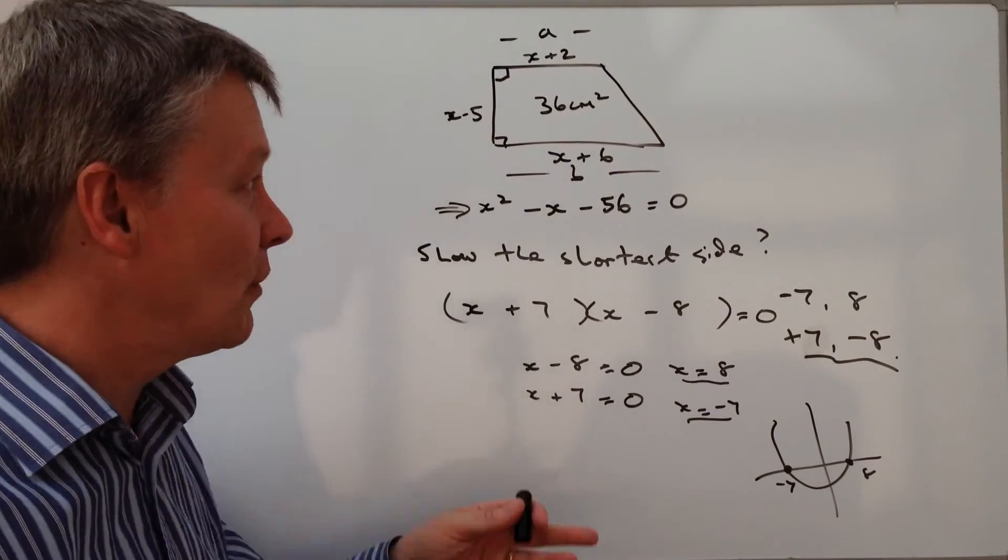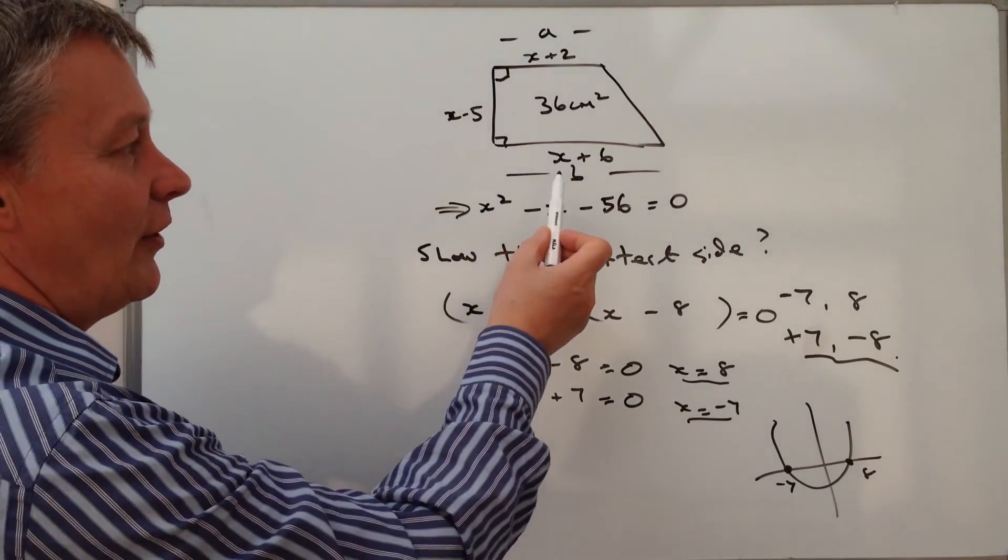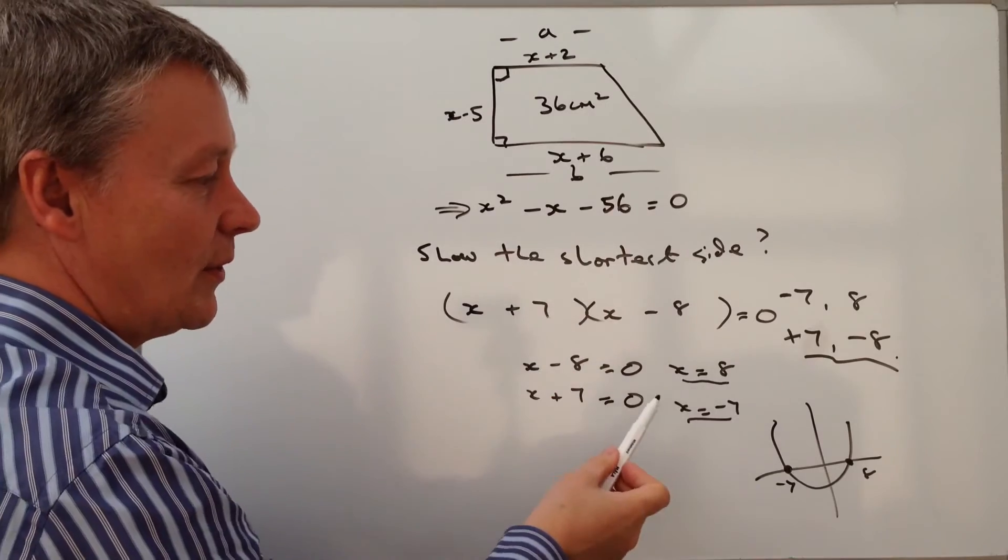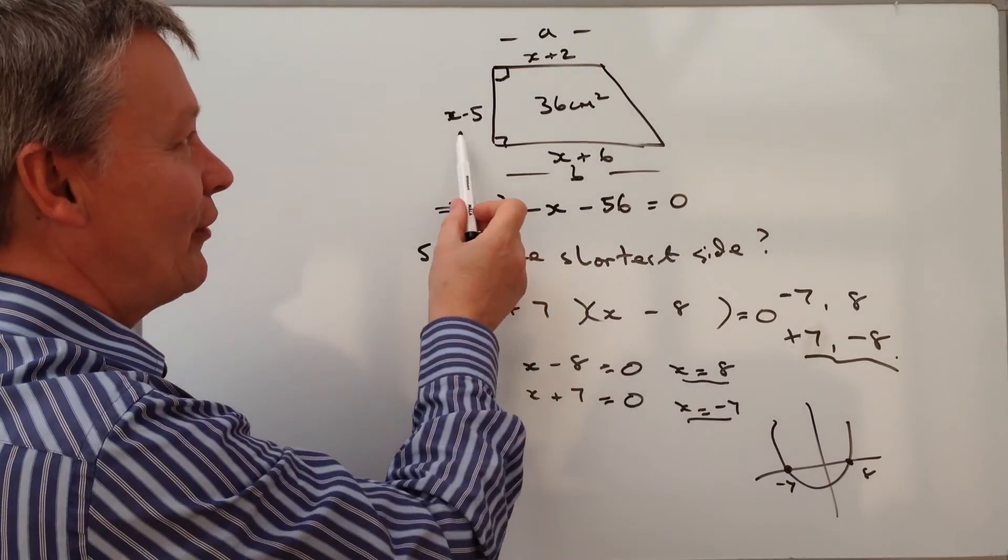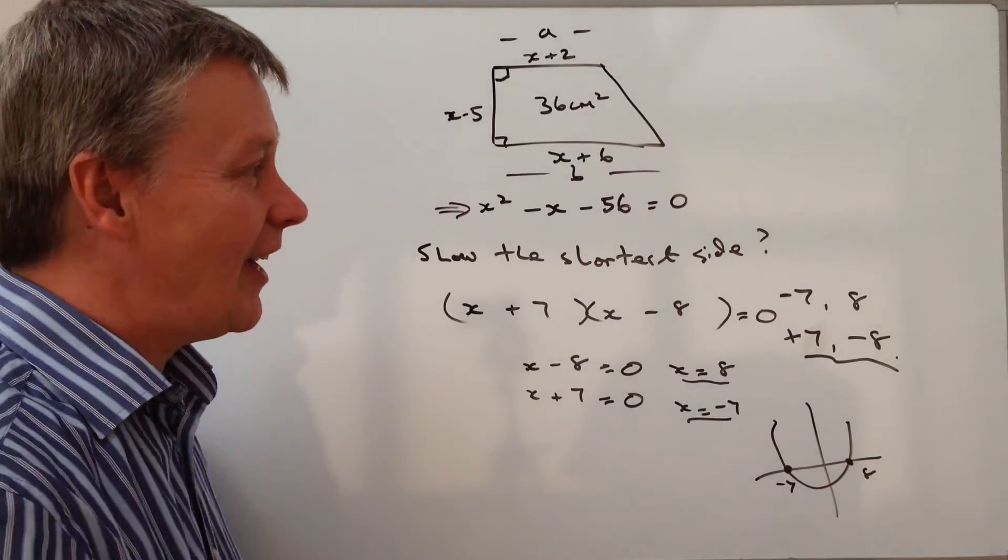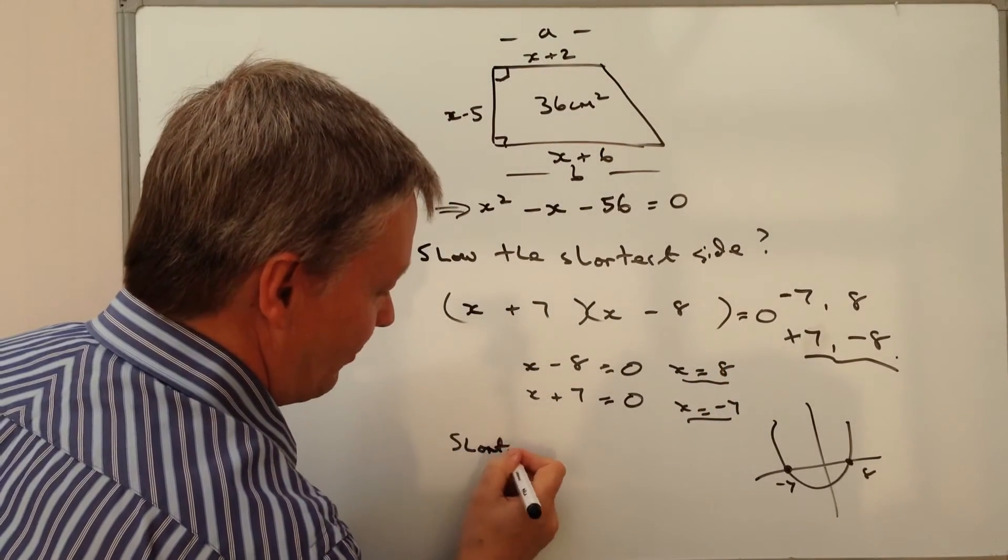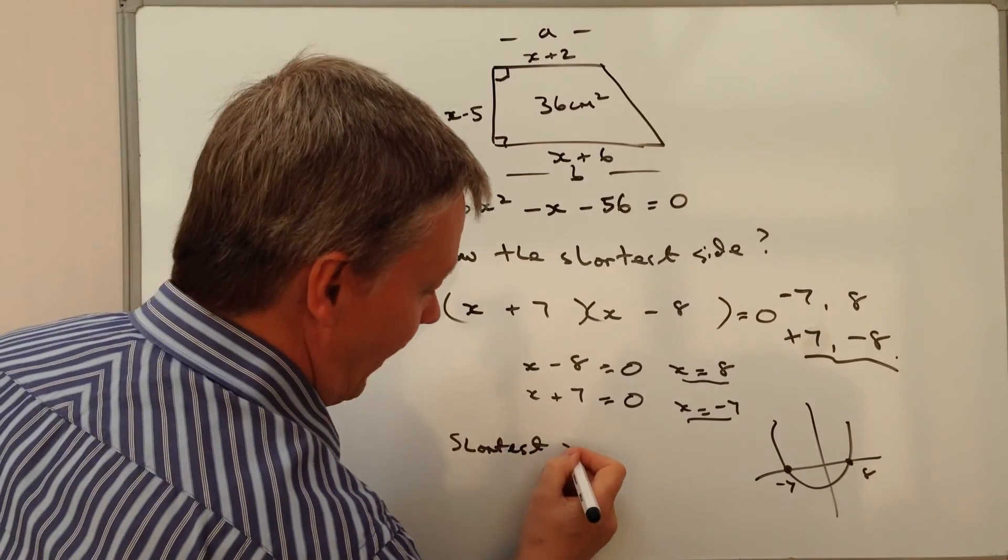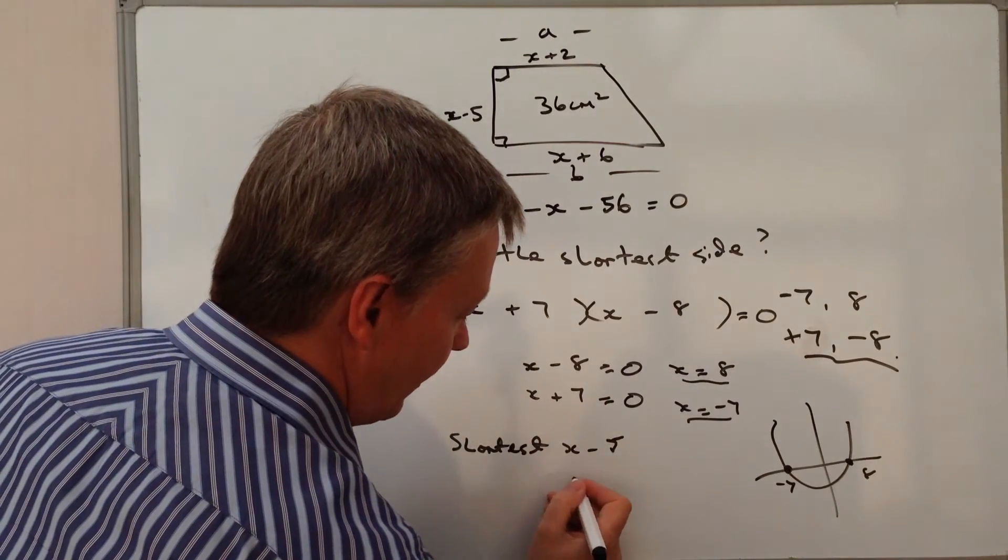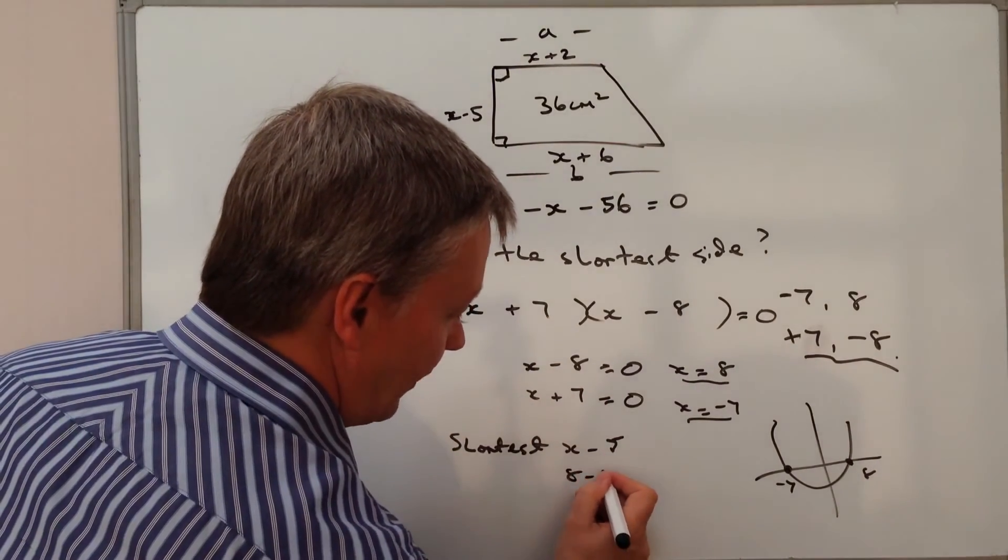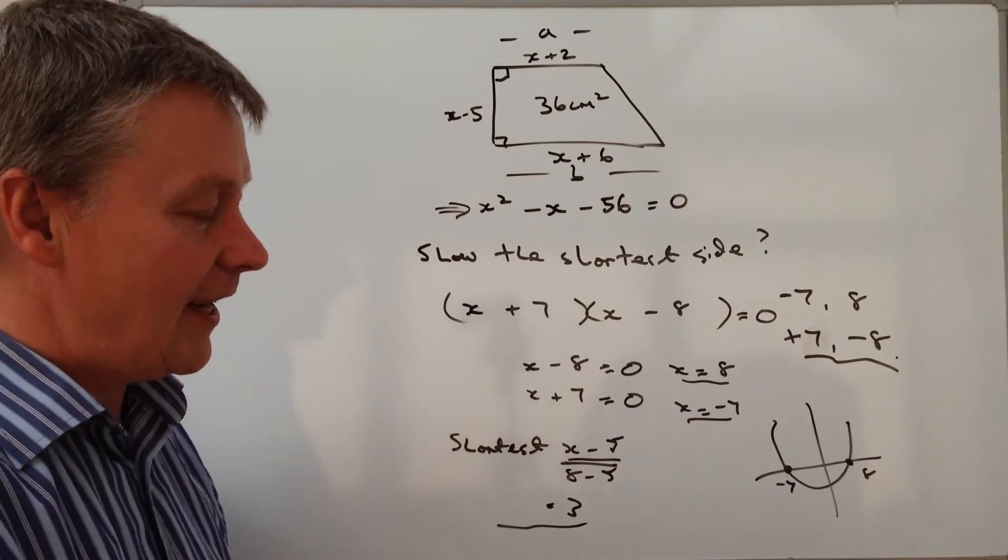Well, I can't use minus 7, it's a negative number, it's not going to work in that. So I've got x being 8. So in other words, I've got three dimensions here. I've got x plus 6, which is going to be 14. I've got x minus 5, which is going to be 3. And I've got x plus 2, which is going to be 10. So actually, the shortest side of this particular trapezium is going to be when x is minus 5, because the actual value of it would be 8 minus 5, which equals 3. So this is the shortest side is x minus 5.